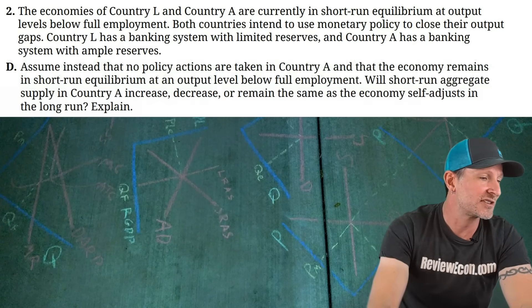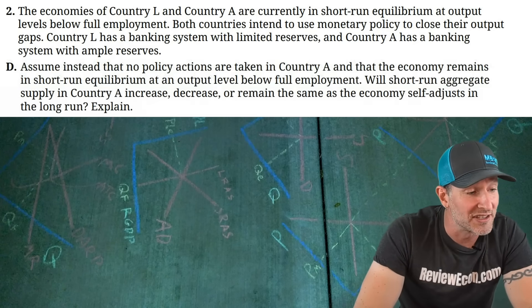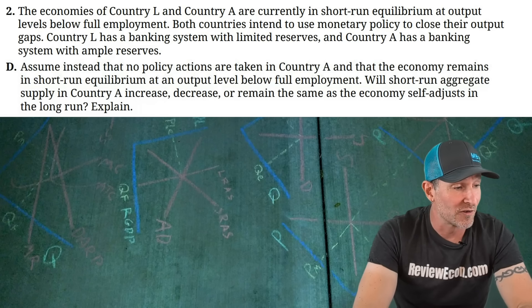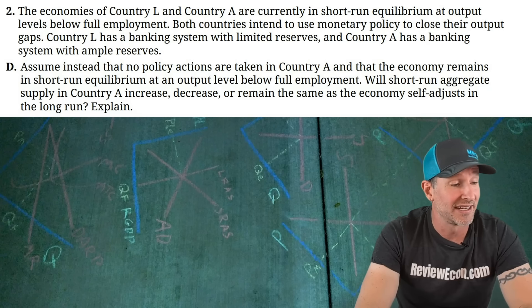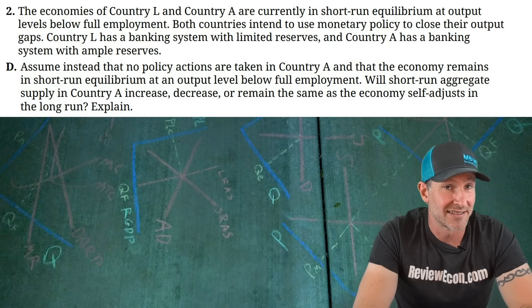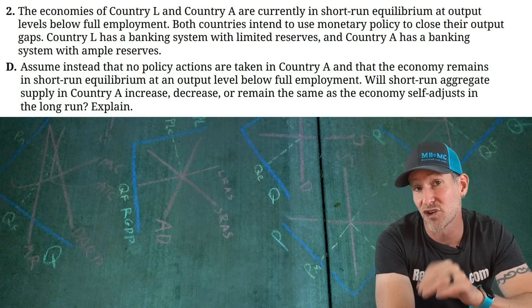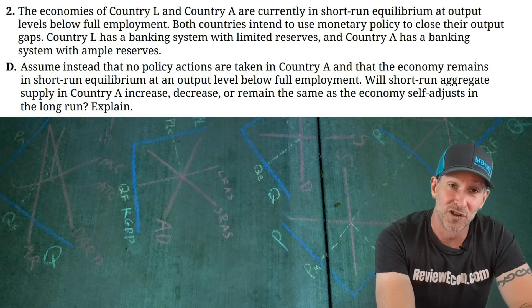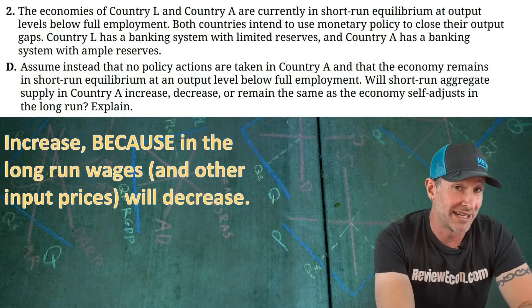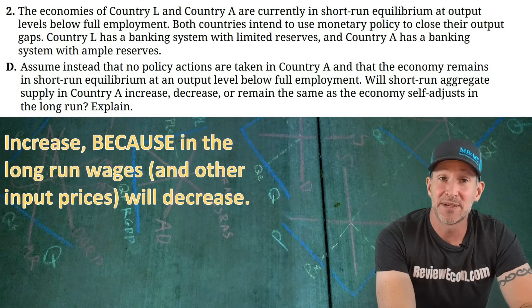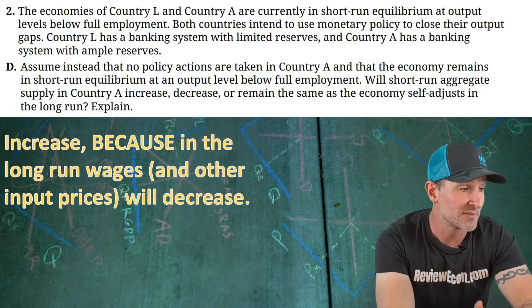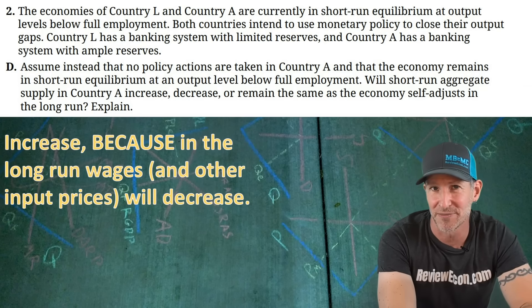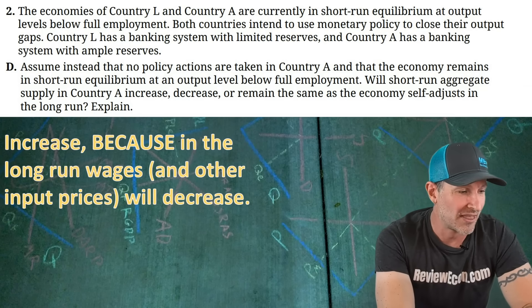For Part D, we assume no policy actions are taken in Country A and the economy remains in short-run equilibrium below full employment. Will the short-run aggregate supply curve increase, decrease, or remain the same as the economy adjusts to long-run equilibrium? The answer is increase, because in the long run wages and other input prices will decrease due to high unemployment. Workers eventually accept lower wages, causing a rightward shift of the short-run aggregate supply curve back to full employment.